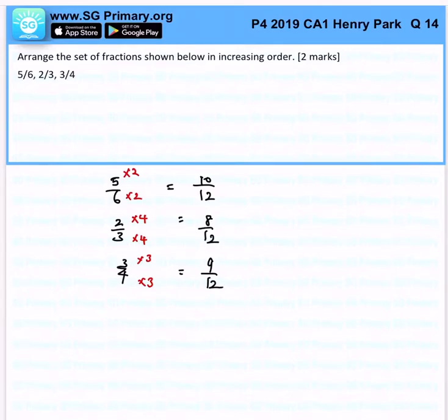So if you want to put them in increasing order, very simple: 2 thirds first, then 3 quarters, then 5 over 6.